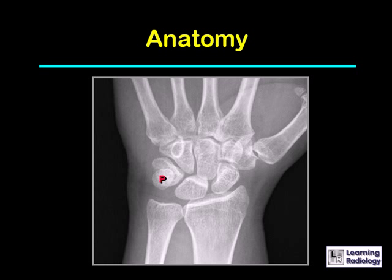The distal carpal row from lateral to medial includes the trapezium, also called the greater multangular. You can see how much of the thumb actually extends past the trapezium normally. Then the trapezoid, also called the lesser multangular, the capitate, which should line up with the lunate, and the hamate with its elliptical-shaped hook.